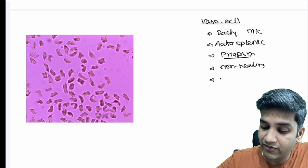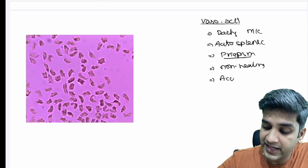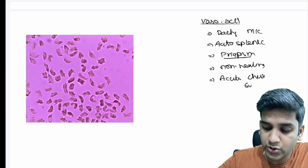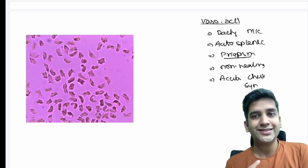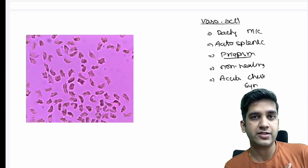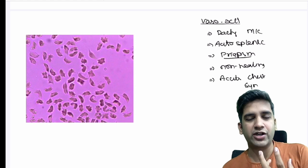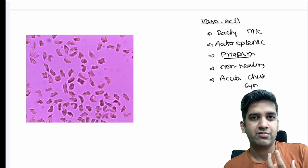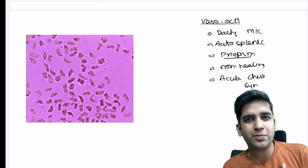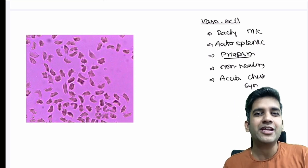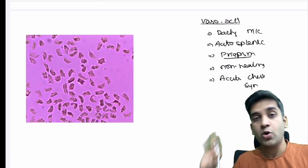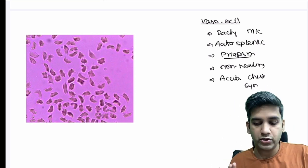Last but not least, there is a very dangerous situation called acute chest syndrome. The sickle RBCs block the pulmonary capillaries suddenly. The patient presents with breathlessness, diaphoresis, and chest pain — mimicking an MI. This is a classic presentation of acute chest syndrome. All of these features — including autosplenectomy, dactylitis, priapism, leg ulcers, and acute chest syndrome — come under the heading of vaso-occlusive crisis.